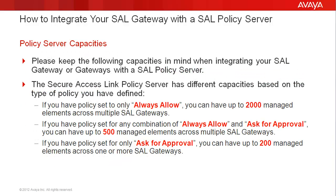Please keep the following capacities in mind when integrating your SEL Gateway or gateways with a SEL Policy Server. The Secure Access Link Policy Server has different capacities based on the type of policy you have defined. If you have policy set to only Always Allow, you can have up to 2,000 managed elements across multiple SEL gateways. If you have policy set for any combination of Always Allow and Ask for Approval, you can have up to 500 managed elements across multiple SEL gateways. If you have policy set for only Ask for Approval, you can have up to 200 managed elements across one or more SEL gateways.